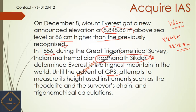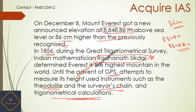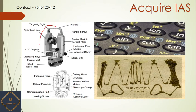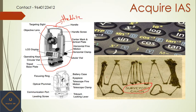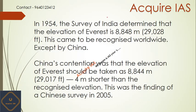Before the GPS system, the instruments used to measure Mount Everest were: the theodolite, the surveyor's chain, and trigonometrical calculations. The theodolite is this instrument here — this is how a theodolite looks. And this is the surveyor's chain. These are the trigonometrical calculations used in those earlier surveys.